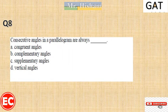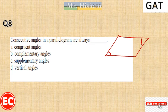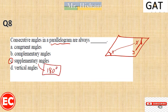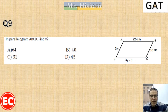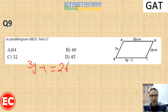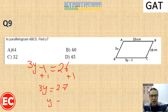Consecutive angles in a parallelogram are supplementary, meaning their sum equals 180 degrees. In parallelogram ABCD, we are looking for the value of Y. Since opposite sides in a parallelogram are equal, we set 3Y minus 1 equal to 26. Adding 1 to both sides gives 3Y equals 27. Dividing by 3, Y equals 9.